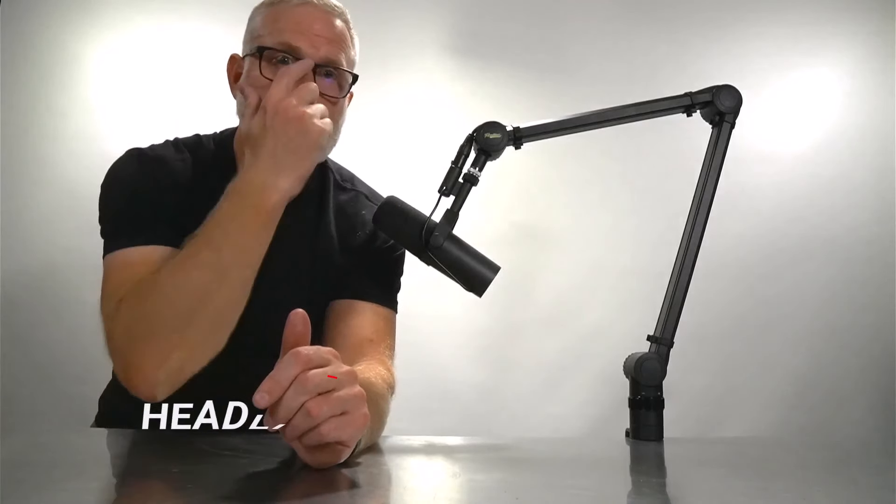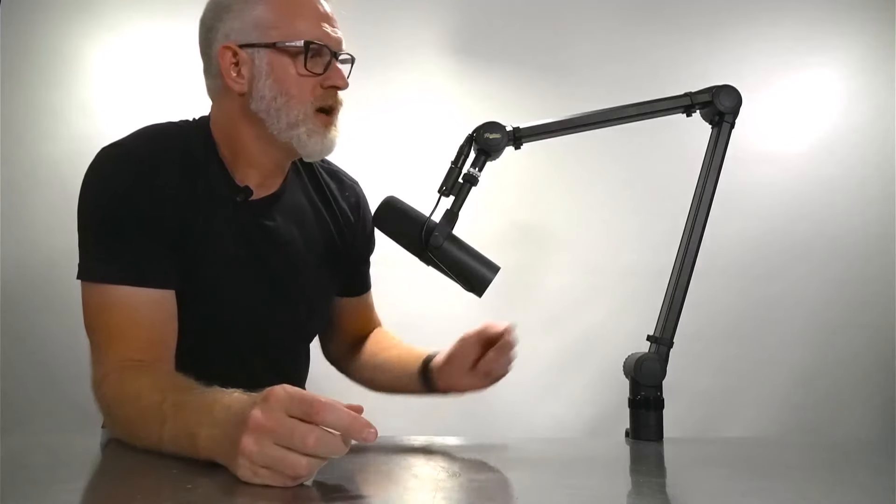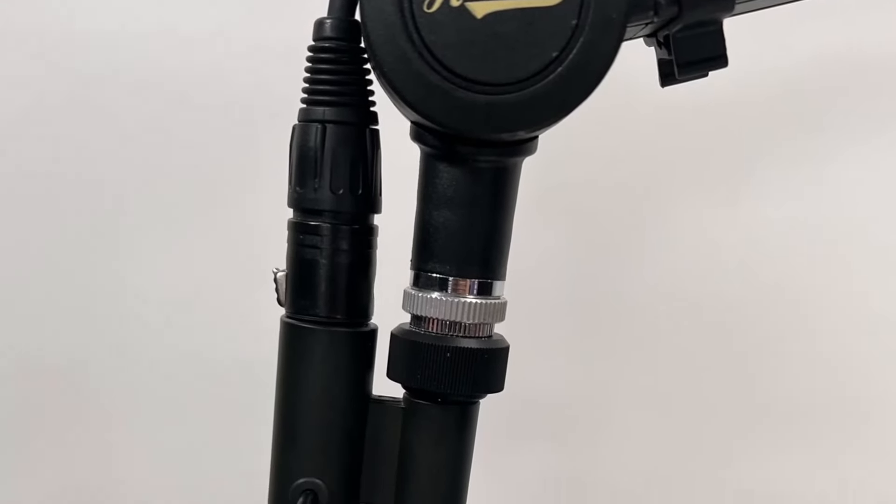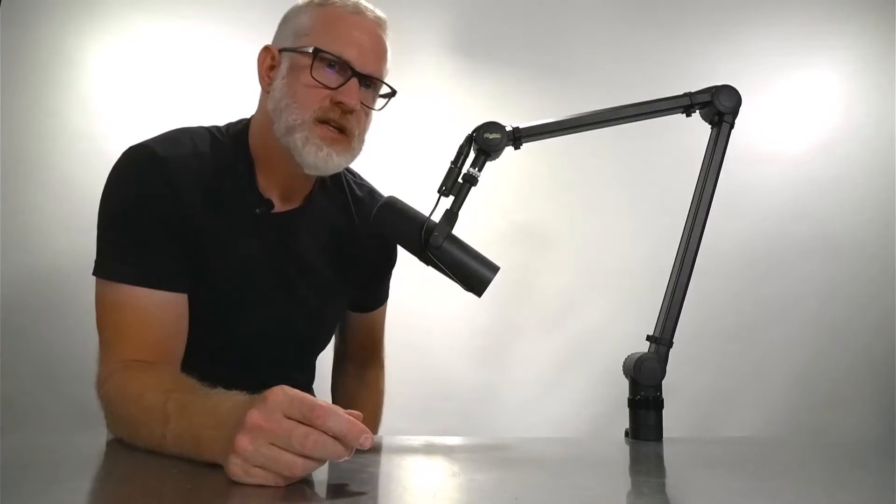Hey guys, Travis here from Hollywood DJ. Today we're going to go over the Headliner Sierra desktop boom stand. This thing is rigged up right now with an SM7B. I'm sure you know that microphone. Super common with podcasting and applications where you're going to use a stand like this.